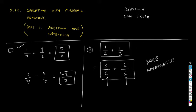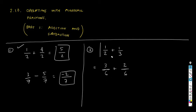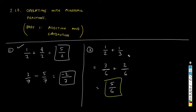So 3/6 + 2/6 = 5/6. We simply add the numerators and keep the denominator. As we knew, the result of 1/2 + 1/3 is 5/6.